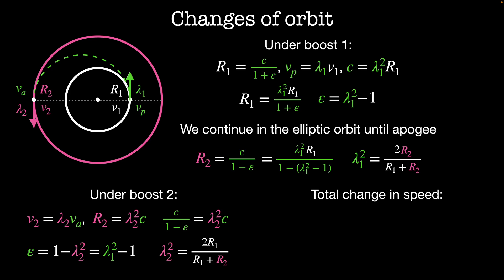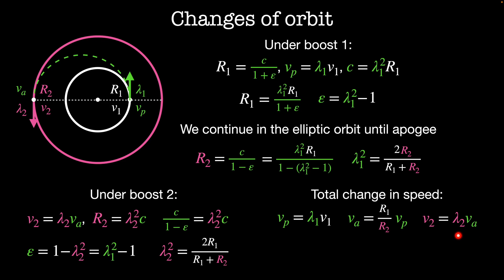We can work out the total change in speeds. Starting at velocity V1 and boosting by lambda1 gives us the velocity at perigee. As we travel in the elliptical orbit from perigee to apogee, and since angular momentum is conserved, the velocity at apogee equals R1 divided by R2 times the velocity at perigee. When we're at apogee we apply the second boost lambda2 to reach the final velocity of the second circular orbit.